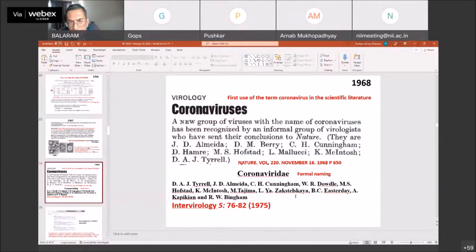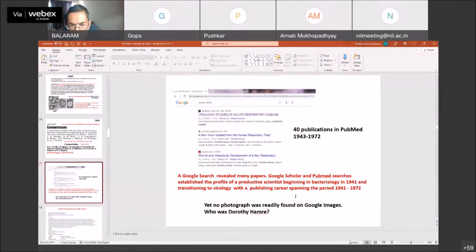The term coronavirus entered the literature in 1968 when a little news item appeared in Nature. A collection of authors had written a letter to Nature. Instead of publishing the letter, the editor of Nature summarized their conclusions. There again, I found the name Hambre. Much later in 1975, the coronavirus acquired its formal name in the journal Intervirology. But by this time, Hambre's name was no longer there.